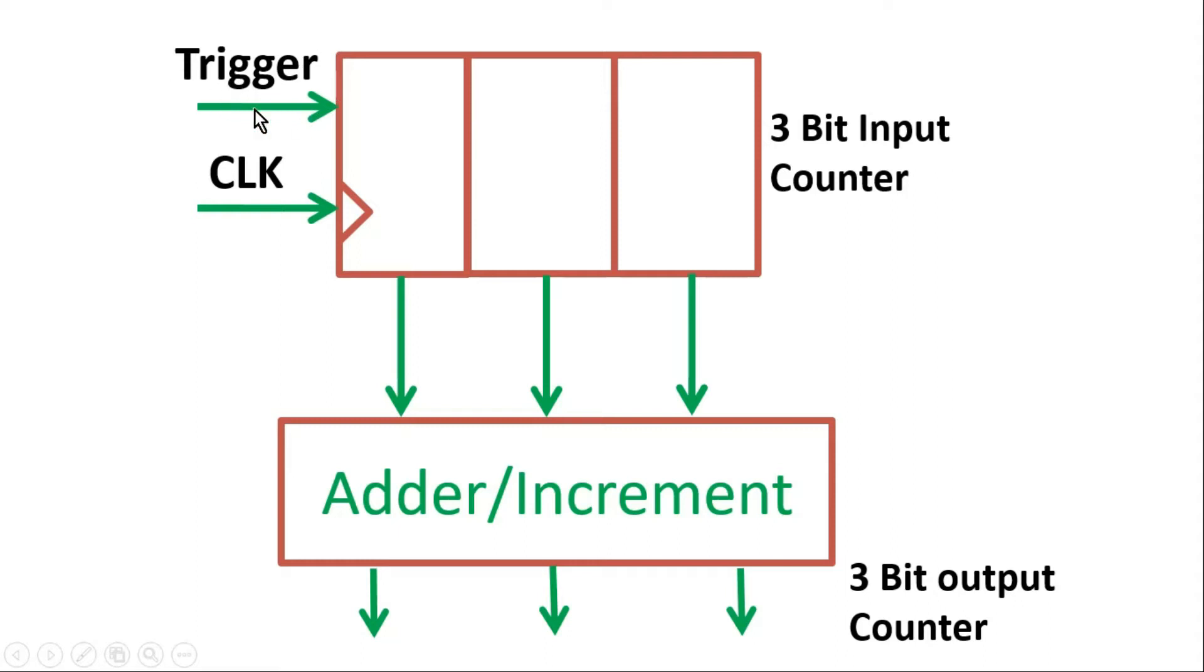Now in its solution, you simply need to put an incrementer or adder which will increment its input by 1, and this will be your final 3-bit output counter. Let us move to your next question.